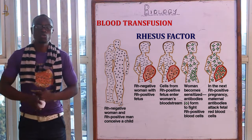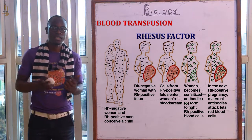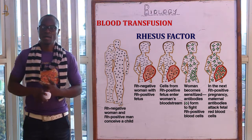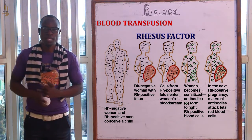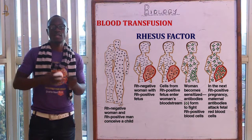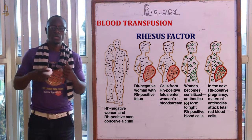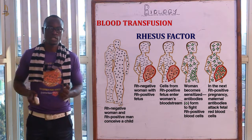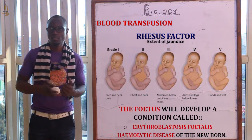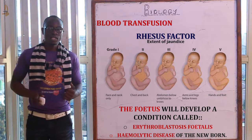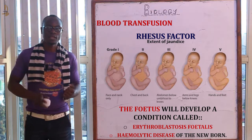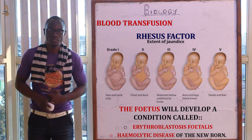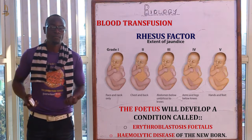The first pregnancy will proceed to completion and the mother will give birth to a healthy firstborn. However, during a second pregnancy, if the fetus's blood leaks into the mother's blood, the mother's antibodies will cause destruction of the fetus's red blood cells, treating them as a foreign or harmful material in the circulatory system. The fetus will then develop a condition referred to as erythroblastosis fetalis, or hemolytic disease of the newborn.